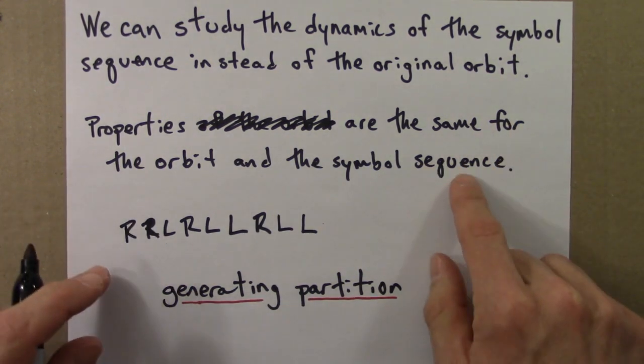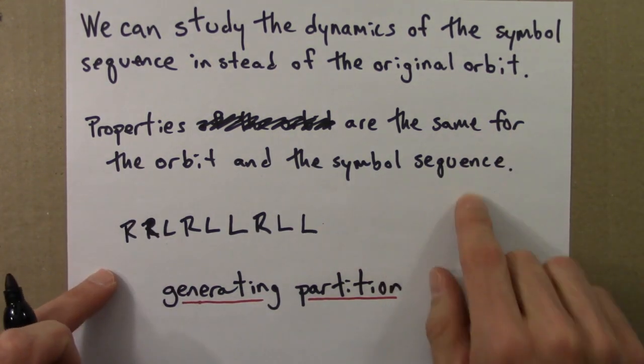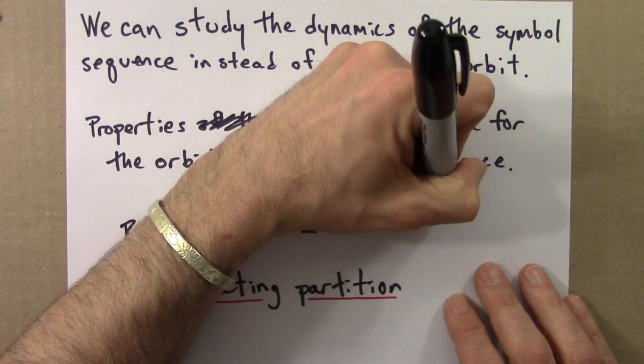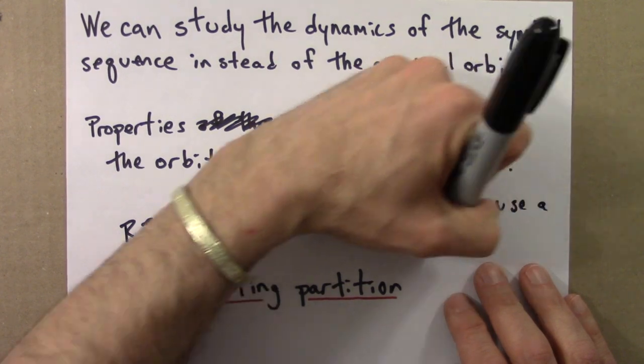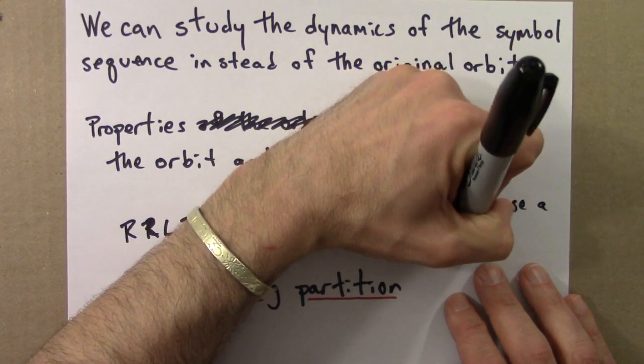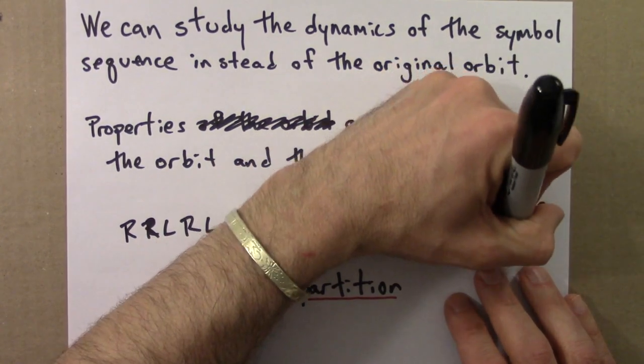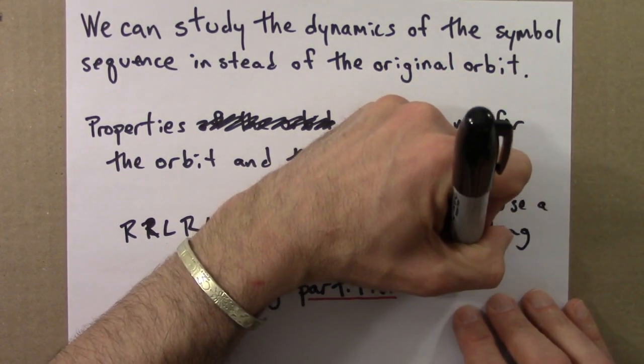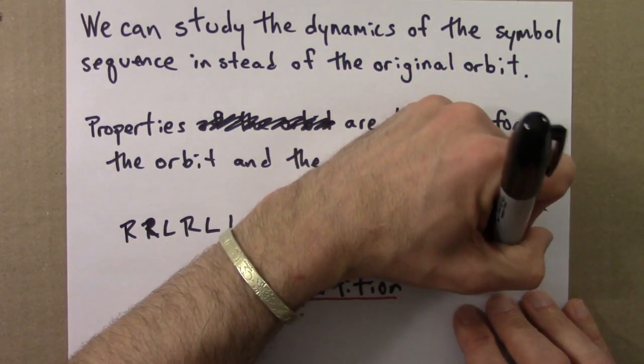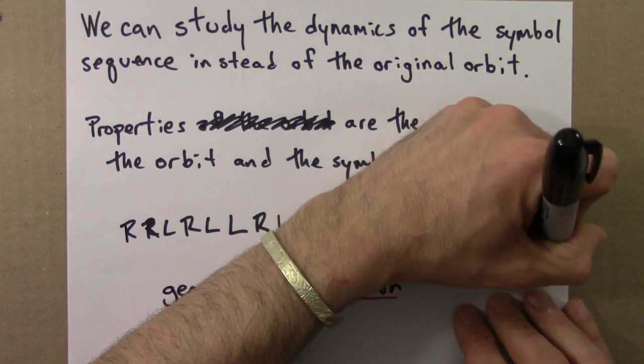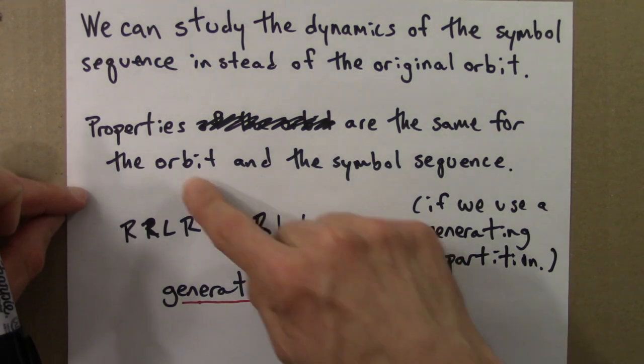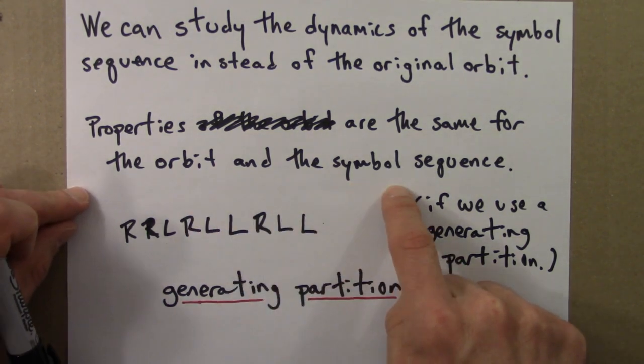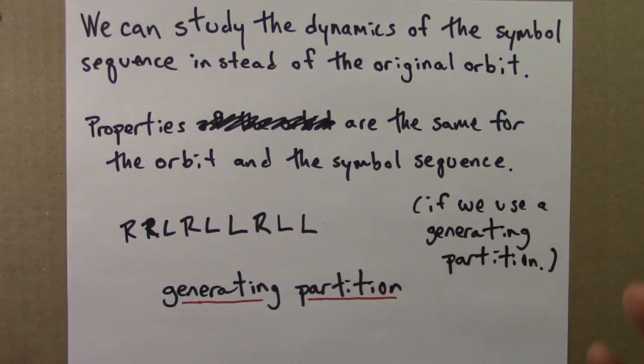It's only when this is the case that this is true. So, to make things a little more accurate, if we use a generating partition, which we do in this case, the properties of the orbit and properties of symbol sequences are in the sense I've described the same.